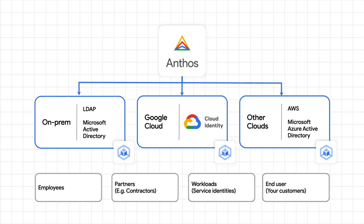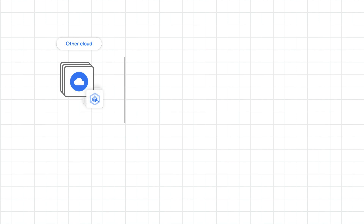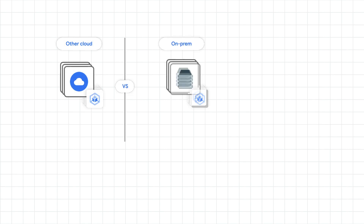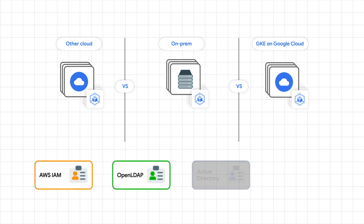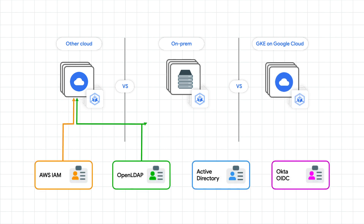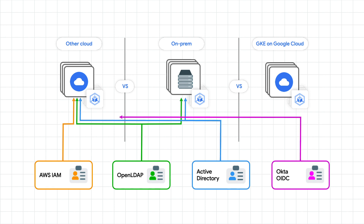Further increasing the complexity, traditionally Google Cloud has offered a synchronization-based identity model, requiring you to synchronize identities with Google Cloud. While this may work for certain scenarios, you may have concerns around consistency and latency for a hybrid or multi-cloud deployment.